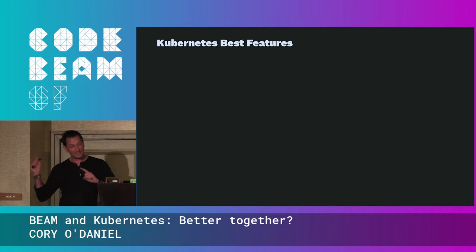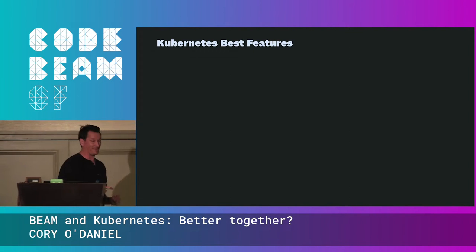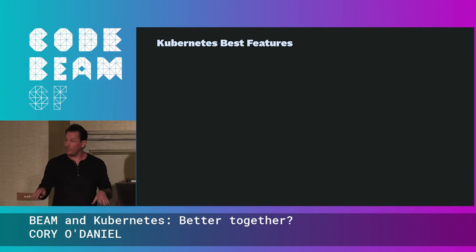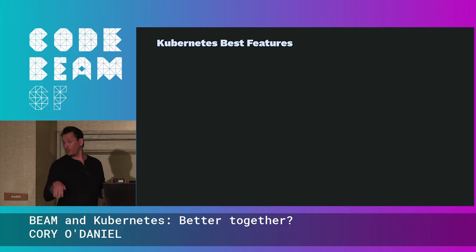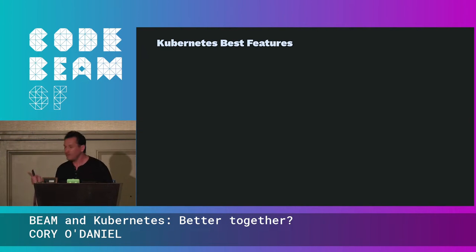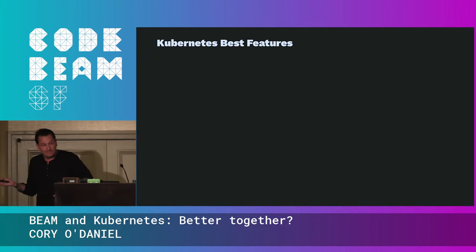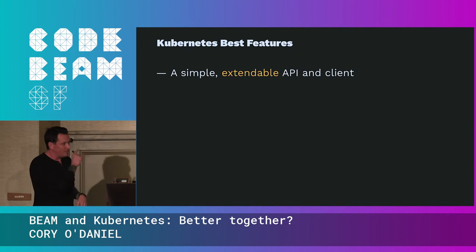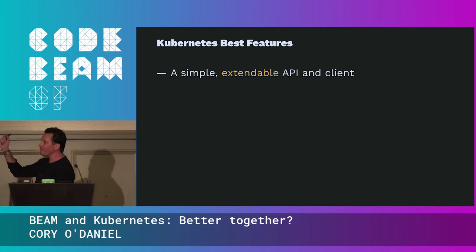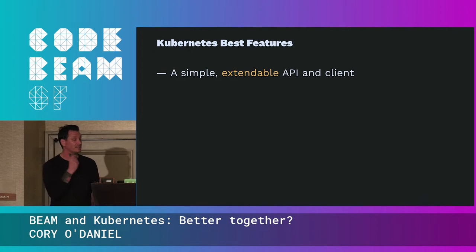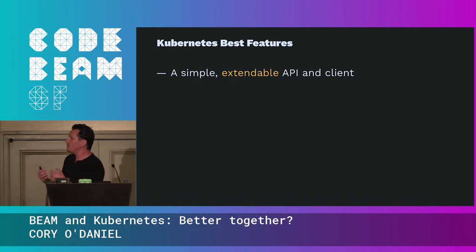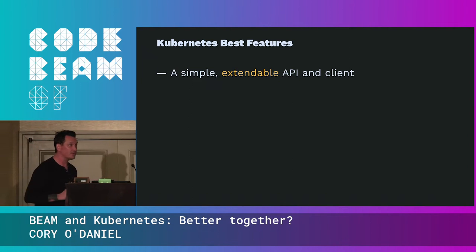Before we hit that huge list of features, I'm going to show you Kubernetes' best features. The cool thing is it's not on the landing page, it's not on the marketing page. The number one feature of Kubernetes is a simple, extendable API and client. This API and client is key to everything you do in Kubernetes, and you can extend it — it's always the same tool. The CLI tool kubectl understands your extensions, so when you customize software you don't have to customize your CLI as well.